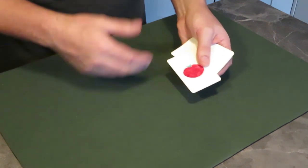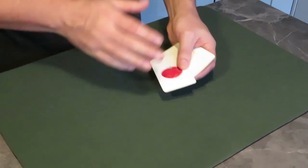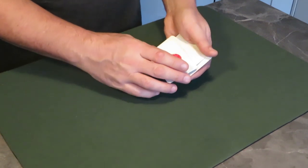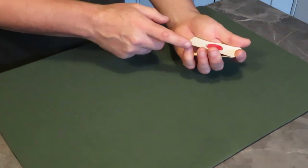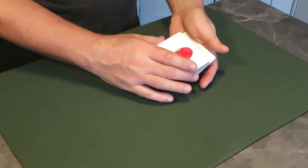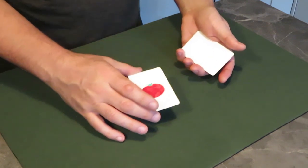You bring this over, you've shown three blanks. There's nothing suspicious at this point. You then square the cards and you've already got a break here. So it's very easy for you to come over and just lift off two cards as one.